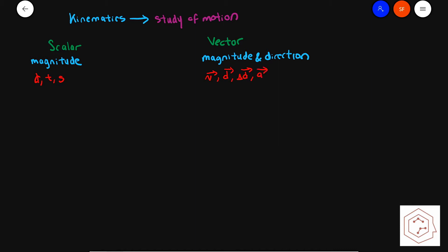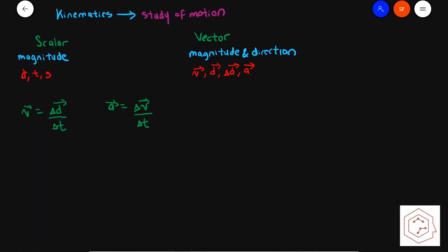Velocity is actually equal to the change in position over the change in time, whereas acceleration is equal to the change in velocity over change in time. This may be confusing at first, however it will become much more clear when we go over the motion graphs later on. Let's just do a visual representation of what position is.